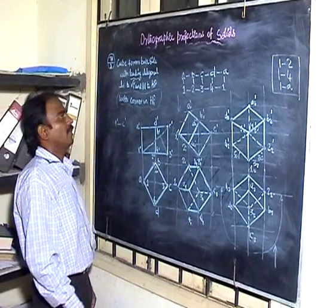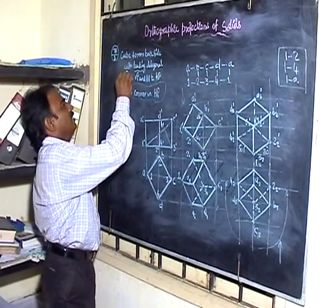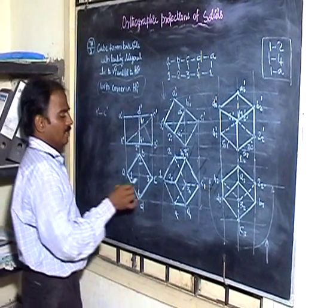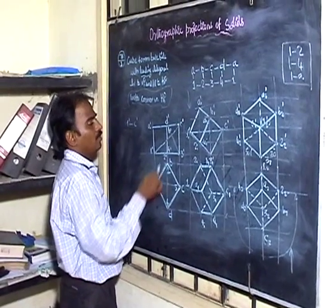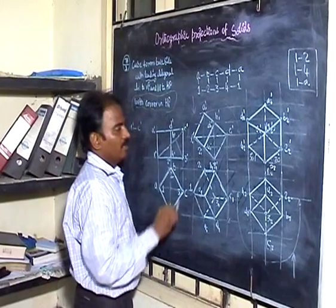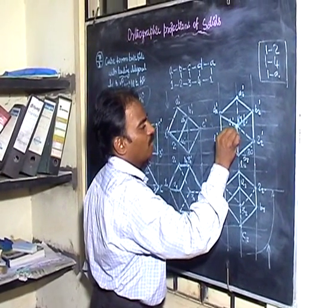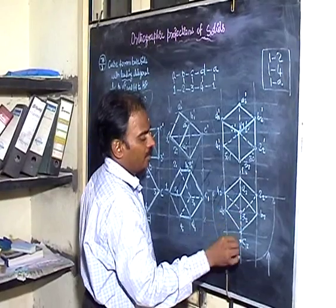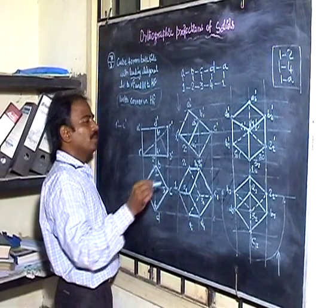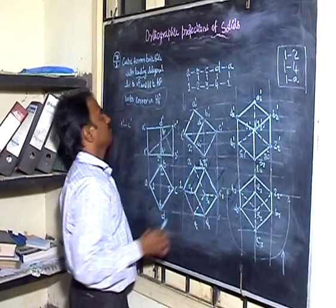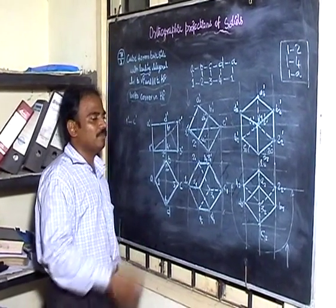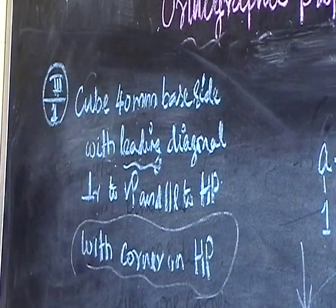You are getting 3,2-dash on the XY line. The leading diagonal was identified as 1C. In this case it is a point in the front view and a line in the top view, which means the leading diagonal is perpendicular to VP and parallel to HP. Your answer is absolutely correct.